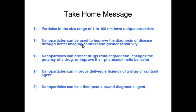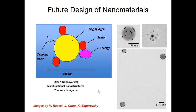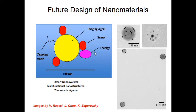Key take-home points: nanoparticles improve disease diagnosis through better imaging contrast and greater sensitivity; they can protect drugs from degradation and improve pharmacokinetic behavior; they improve delivery efficiency of drugs or contrast agents; and they can serve as both therapeutic and contrast agents. Looking ahead, the future involves multifunctional nanostructures — particles combining an imaging agent, a sensor, a therapeutic agent, and a targeting agent — that can both detect and treat disease.